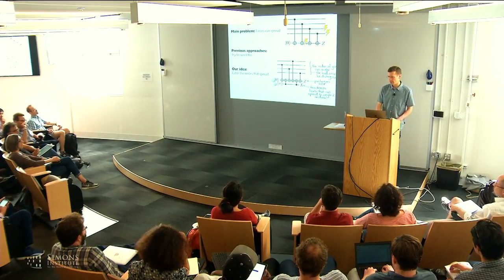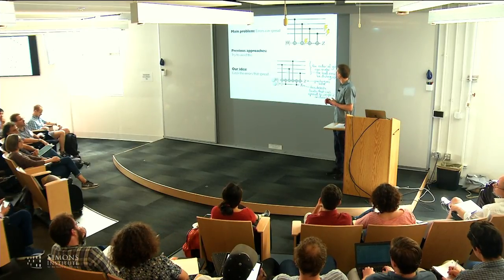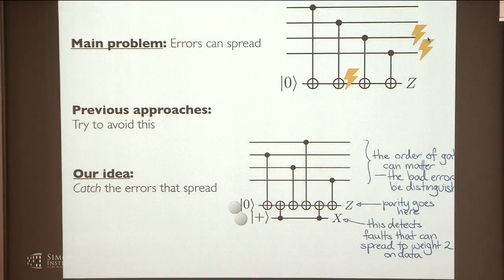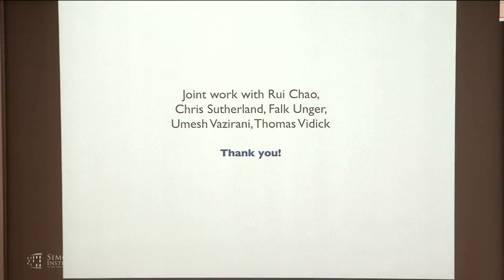So the basic idea, the basic problem with fault tolerance is that errors spread. So for example, here, an error at this location could spread to multiple qubits. Previously, people have tried to avoid this. Our difference is that we don't try to keep errors from spreading, we just try to catch them. This, I guess, is part of a bigger moral in fault tolerance quantum computing, which is if you can detect errors, it's much better than if you can't. That's just what we're doing here. Although in this case, it actually reduces the overhead instead of increasing the overhead. And so we use this idea in a lot of different ways. And this lets us reduce the number of qubits substantially.